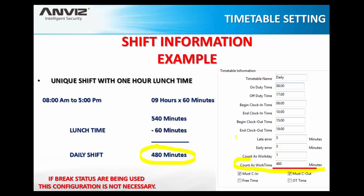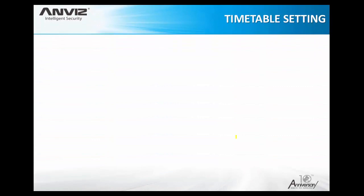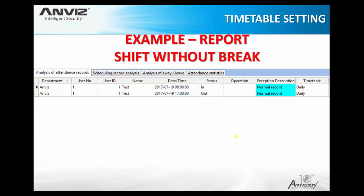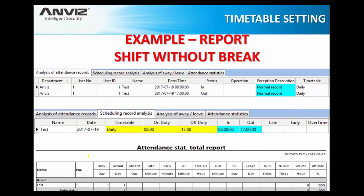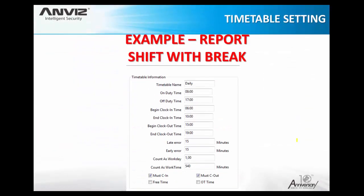If break statuses are being used, this manual discount won't be necessary. In the no-break scenario: the employee clocks in at eight o'clock and clocks out at five in the afternoon. Looking at the scheduling record analysis and the time attendance report, it will show eight hours of work time, discounting one hour for lunch as configured. Now for the with-break scenario: on-duty at eight, off-duty at five, and the total work time counts 540 minutes before break deduction.